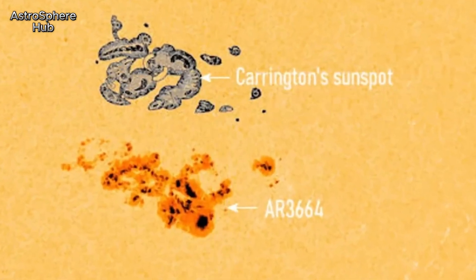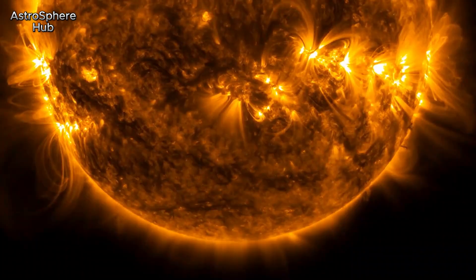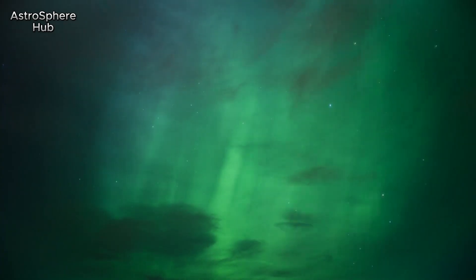It was different in 1859 during the Carrington event. Electrical systems went haywire, and the sky was ablaze even in broad daylight.